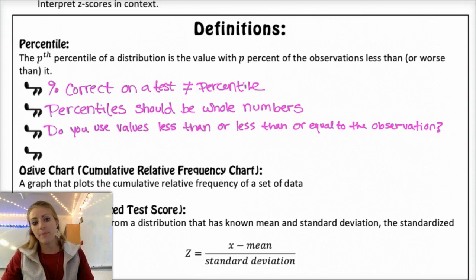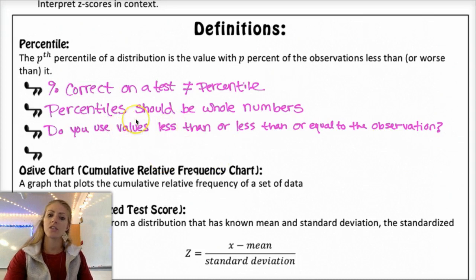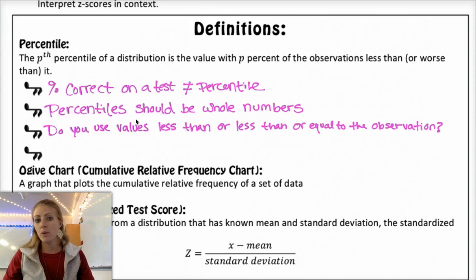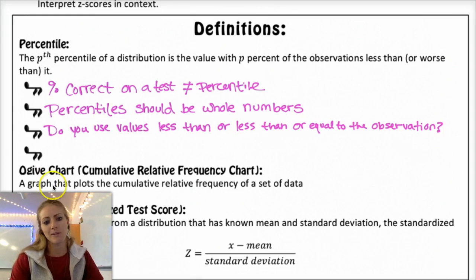And if you did it the other way, where you're only using values less than the observation, then if you had the highest score, you wouldn't actually be in the 100th percentile. You'd be in the 95th or 98th percentile, depending on how many kids are in the class. But if you have the lowest score, you'd be at the 0th percentile. So it just kind of depends on the situation. Typically when we use percentiles, there's so many observations that that little difference doesn't really matter.